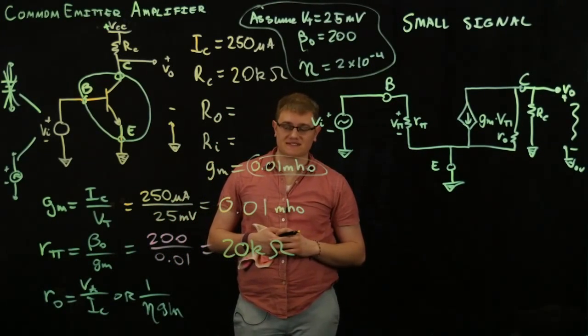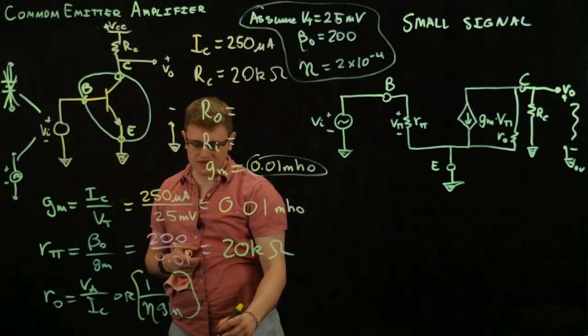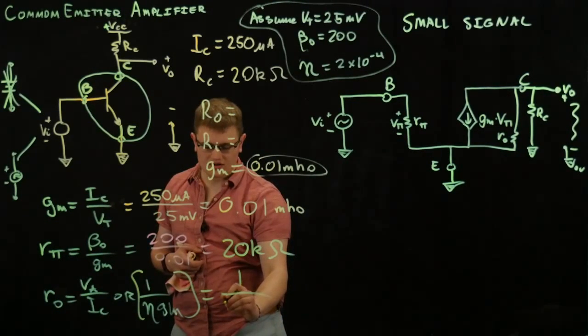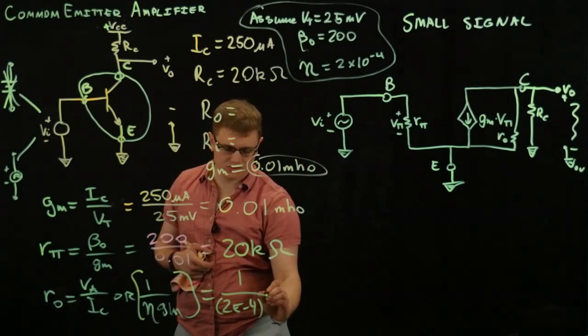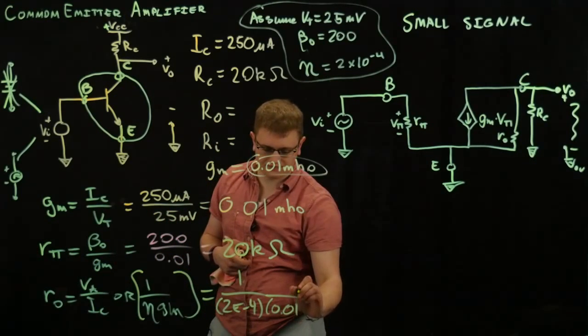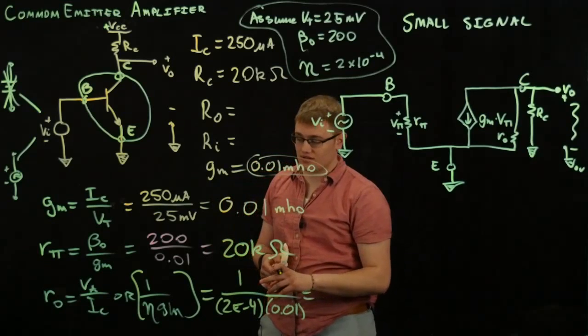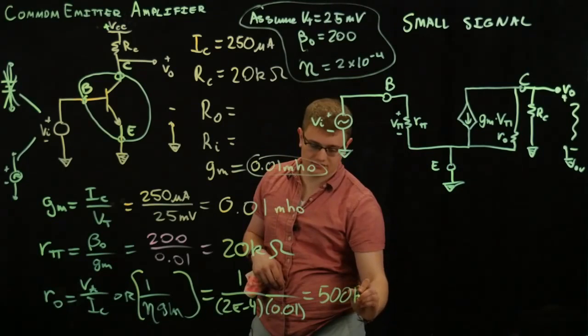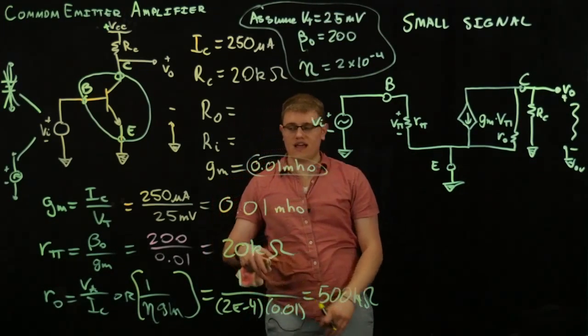Let's do RO next. We have RO, and we're going to be using this one, because we know eta over here and GM. That's going to be 1 over 2 times 10 to the negative 4th. Just a little shorthand right there. And times GM is 0.01. What's it going to get us? That's a big number. I know you're looking at that being like, wow, RO is big. 500. 500 kiloohms. So, we have RO.